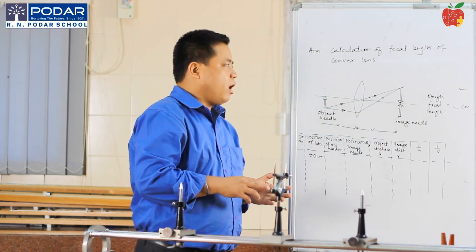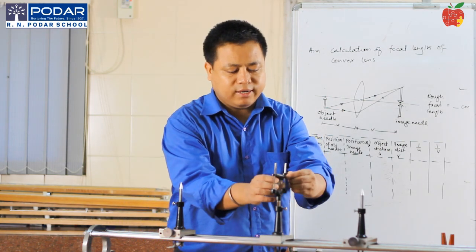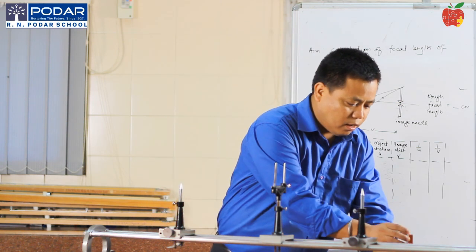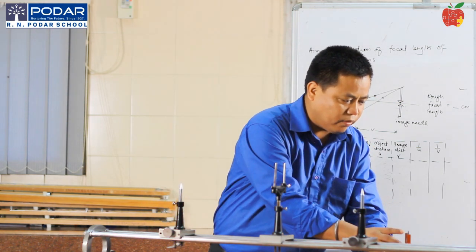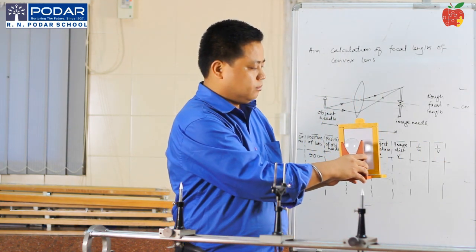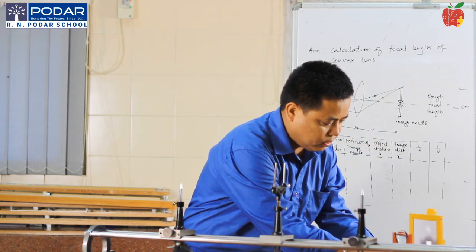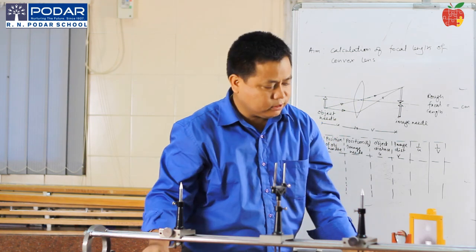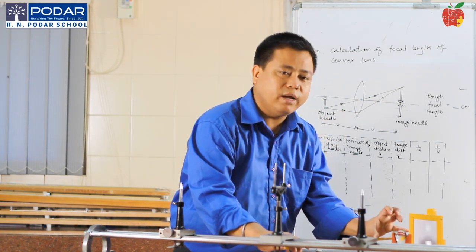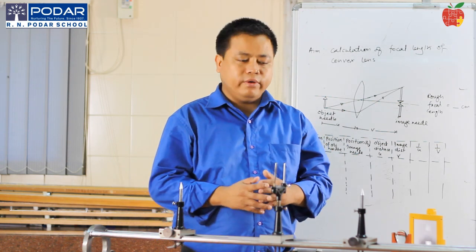Before that, how to find the rough focal length: we take some distant object and find the image formed on a screen. With the help of a scale, we can measure this particular distance, and this distance becomes the rough focal length.